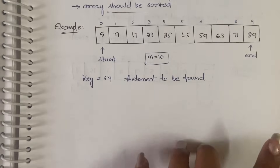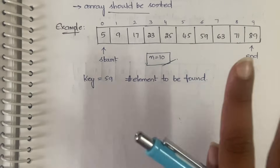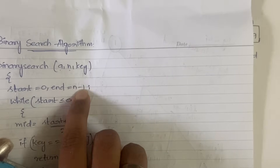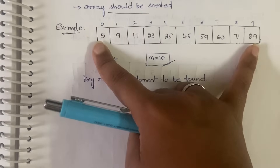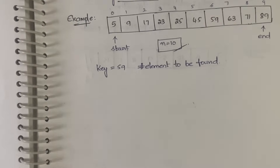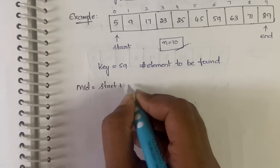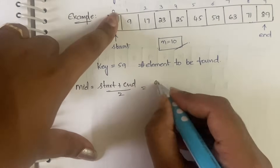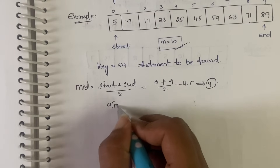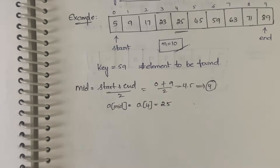Here is our example array: 5, 9, 17, ... 89, with 10 elements. The start position is 0 and the end position is n minus 1, which is 9. Our key value is 59 — we are trying to find 59 in the array. First, we compute mid as start plus end divided by 2: 0 plus 9 divided by 2 is 4.5, which we take as 4. So a[mid] equals a[4] which is 25.